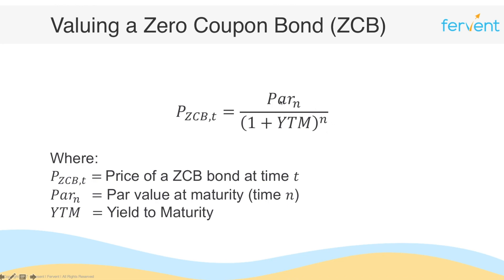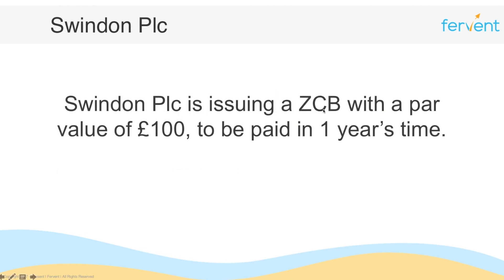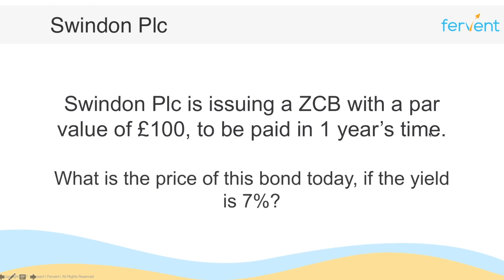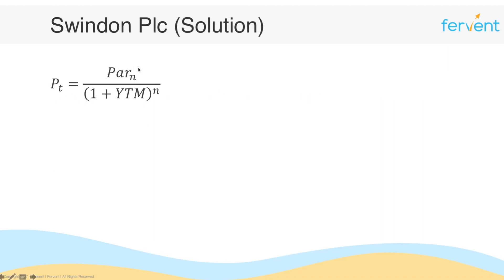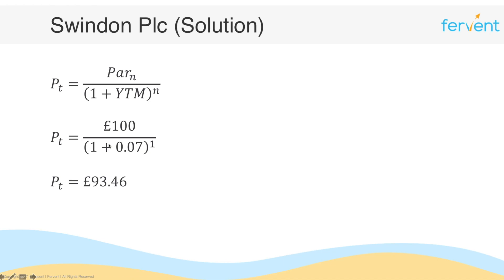Let's look at how this works in an example. Consider Swindon PLC, which is issuing a zero coupon bond with a par value of £100 to be paid in one year's time. What is the price of this bond today if the yield is 7%? We have a par value of £100, a yield of 7%, and n equal to 1. The price equals £100 divided by (1 + 0.07)^1, which gives a price of £93.46.